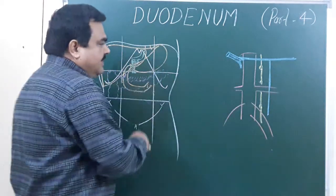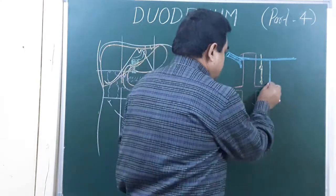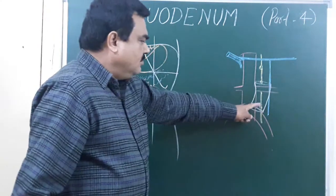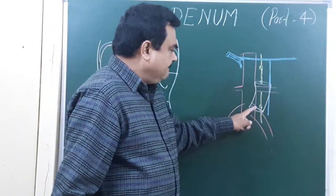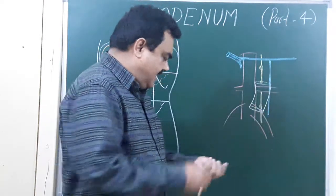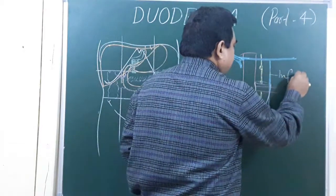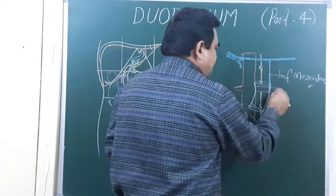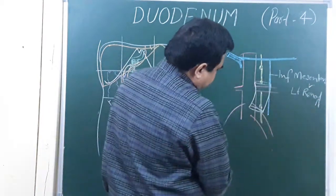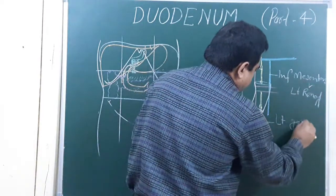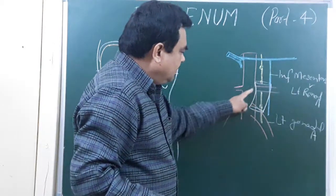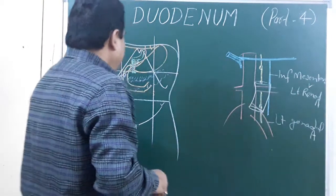The posterior relations of the fourth part of the duodenum — the structures lying behind it — include the sympathetic chain, the inferior mesenteric vein, the left renal artery, the left gonadal artery, and the abdominal aorta. These structures are all related posteriorly to this part.